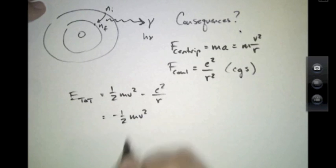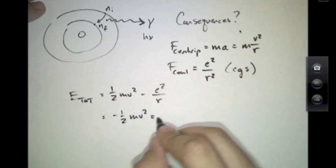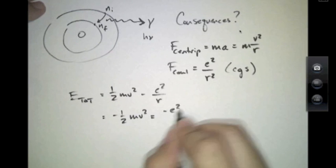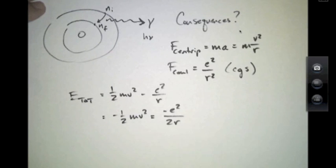And as a result, the total energy of the electron is either given by 1 half mv squared or it's given by minus e squared over R. Notice that means that the electron has a negative total energy.